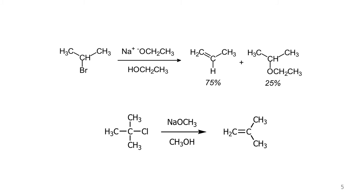As a preview of what's coming in later chapters, one complicating factor in the Williamson ether synthesis is the strong basicity of oxygen anions — of alkoxide ions. While they are good nucleophiles and you can get substitution reactions to occur, there is a competing pathway: an elimination reaction that will deprotonate a position adjacent to the leaving group and result in the formation of a double bond. These two examples illustrate that, and we'll discuss the mechanism of that reaction further down the road.